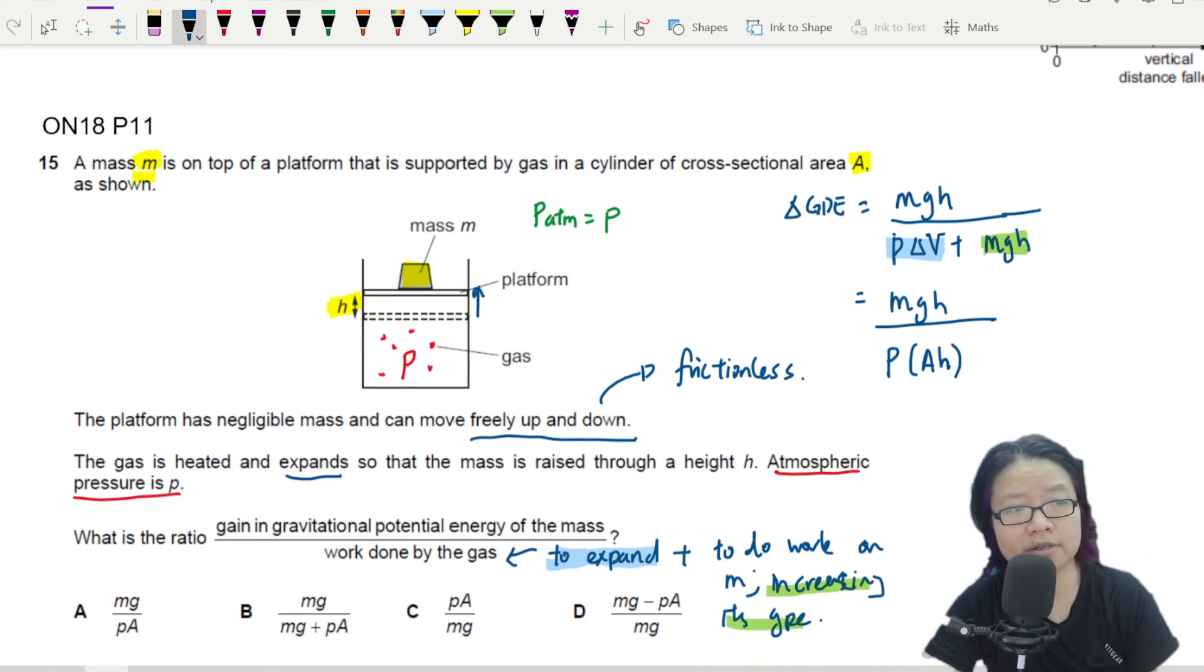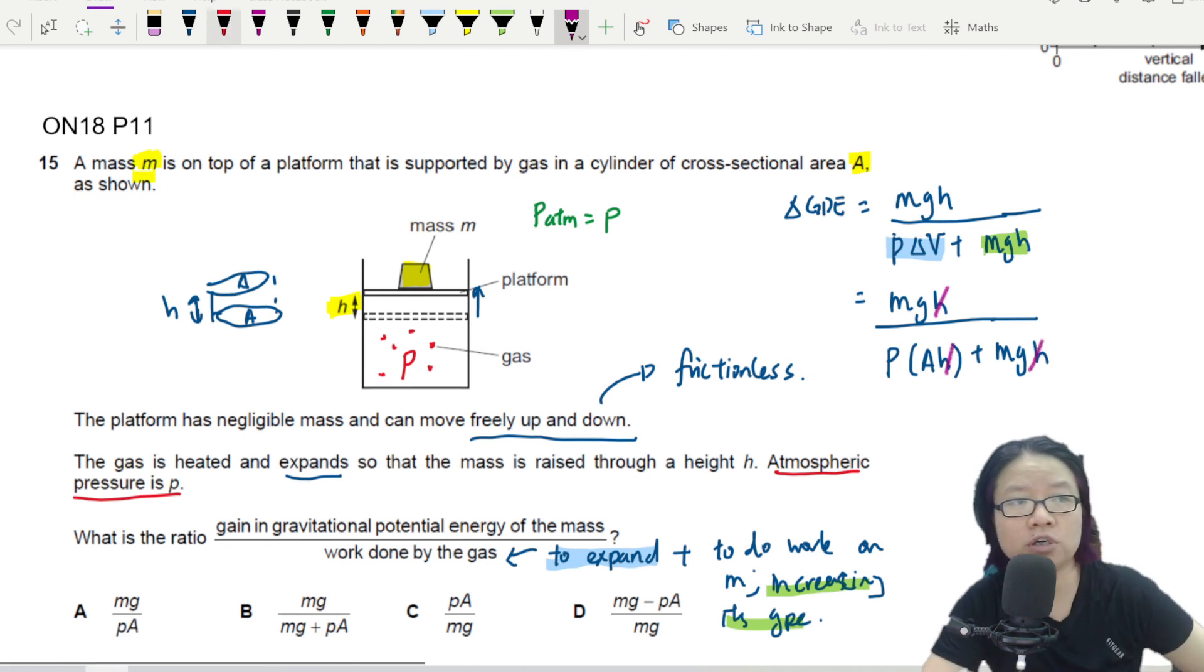I take this height, and then plus mgh. So I can see there's an h in every term. So I can cancel off the h. And I'm left with mg over PA plus mg.